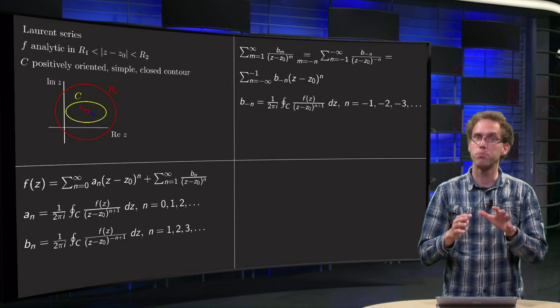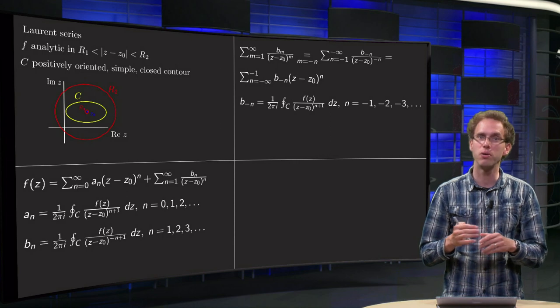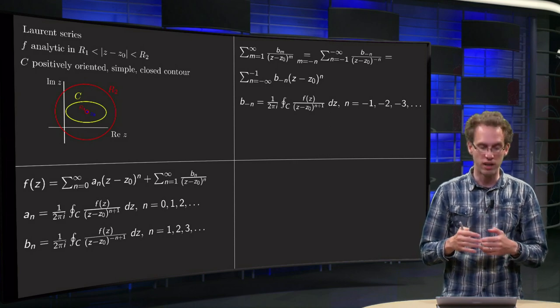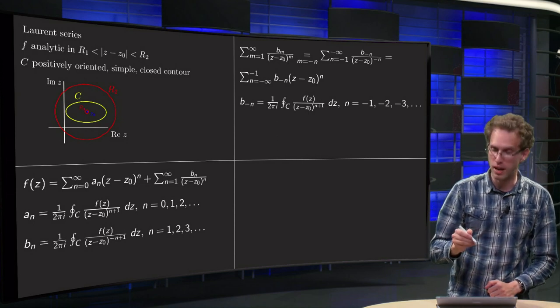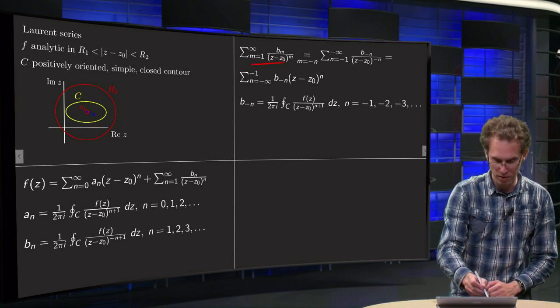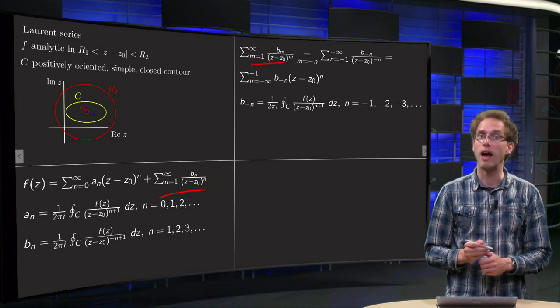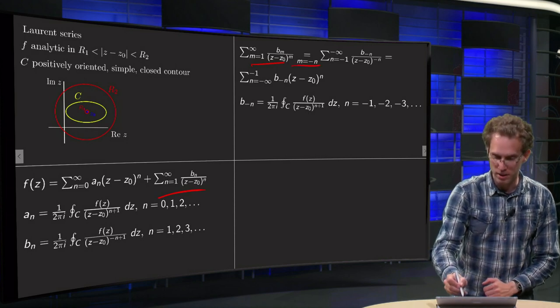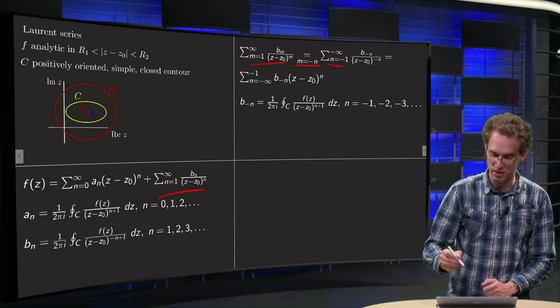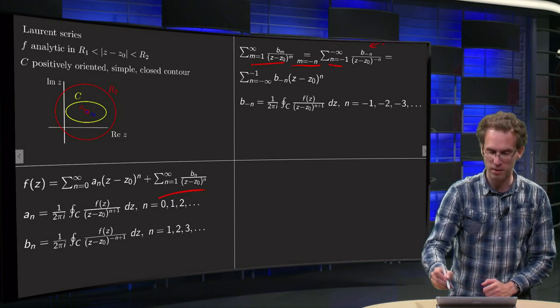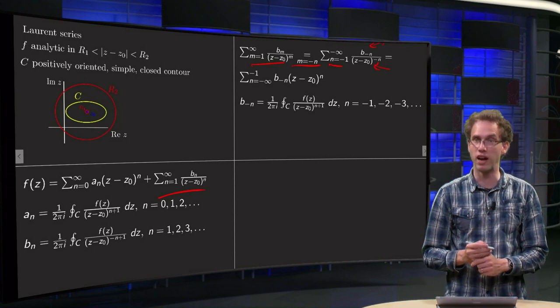So we will not prove it yet in this video. Let's just rewrite a bit. This is one way to write our f of z. So what we can do? We can use an m as our summation variable as well for the second part. Then we set m equals minus n. Then the n runs from minus 1 to minus infinity. You get the b of minus n over here and z minus z0 to the power of minus n over there.